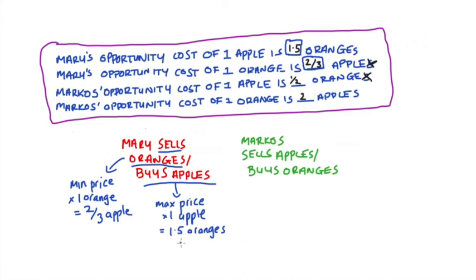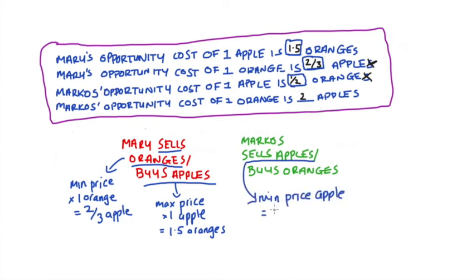Now let's look at Marcos. If trade occurs, Marcos will be selling apples. In order for Marcos to make one apple he gives up half an orange, so the minimum price of an apple that he would accept is half of an orange. If the price were any lower, he would not engage in trade.